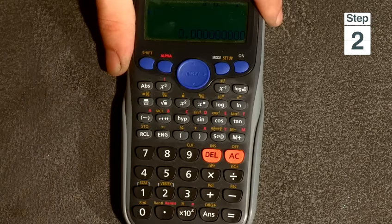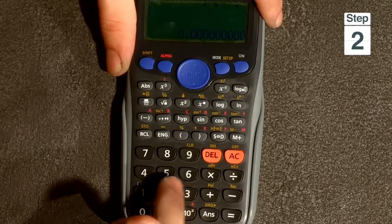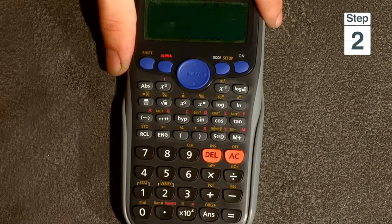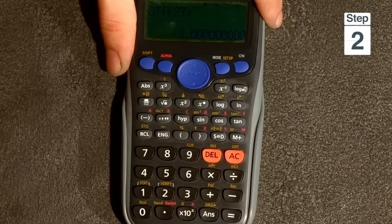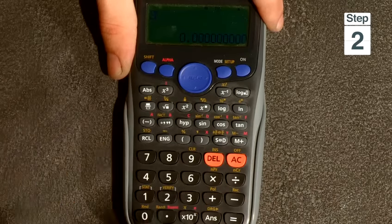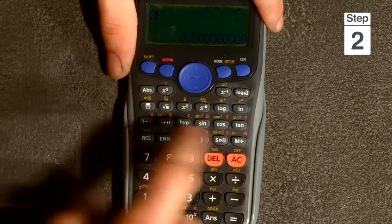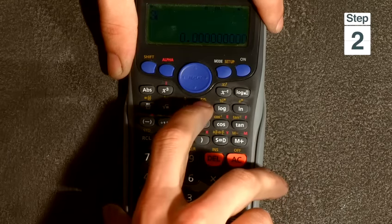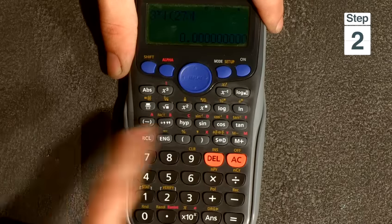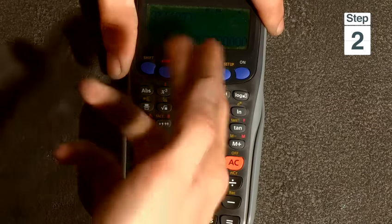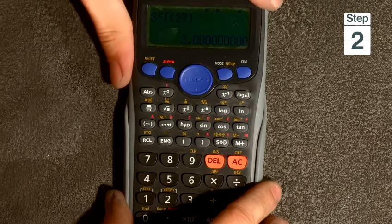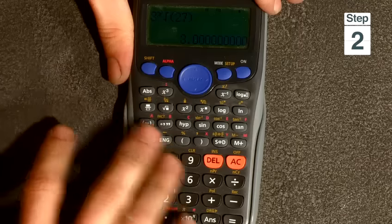For instance, if I wanted to work out the cube root of 27, I would put in cube root of 27 and the answer is 3. To access those functions, I clicked the shift button, then clicked on the button which accesses the cube root, then I put in 27. I closed the bracket, clicked equals, and it gave me the answer 3. Anything in yellow you access by clicking shift.